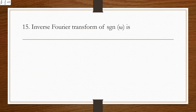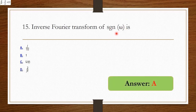The inverse Fourier transform of the signum function — the signum function sgn(ω) has an inverse Fourier transform of j/(πt). Option A is the right answer.